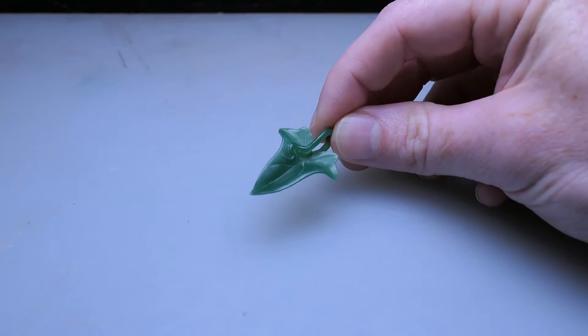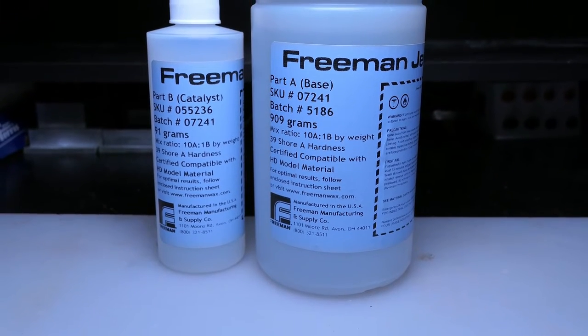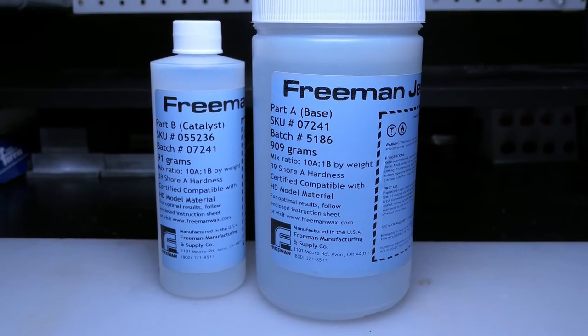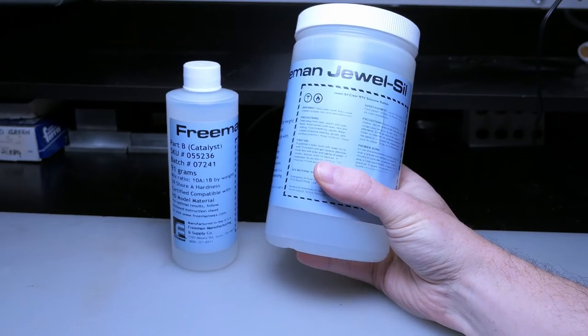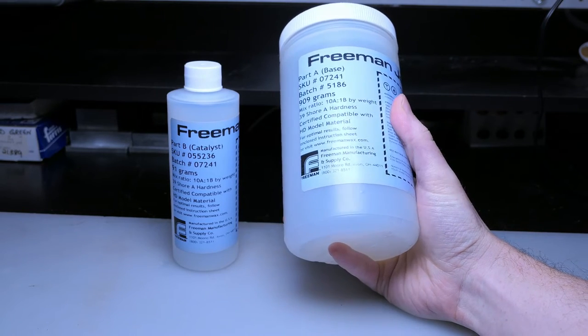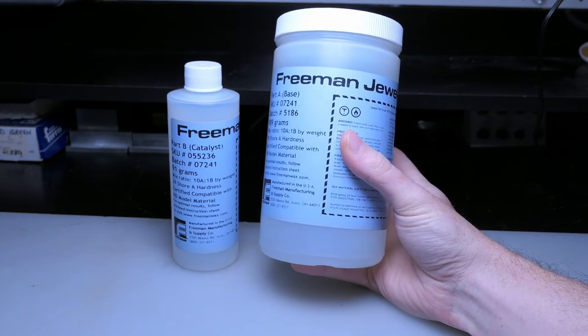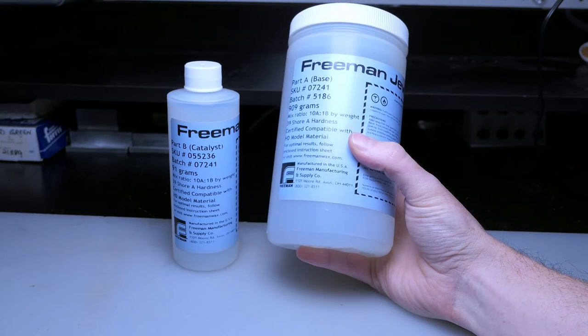To make my mold, I'm going to try using this Freeman Clear RTV silicone rubber that I picked up from a local jewelry supplier. This is my first time using this silicone, but I've seen others have really good results with it. Just in case you want to try it for yourself, I'll leave an affiliate link down in the description of where you can find this silicone.